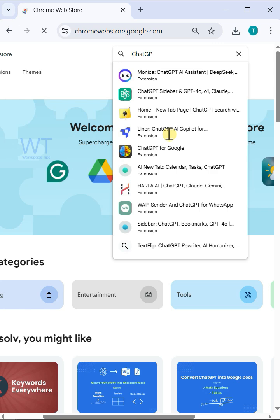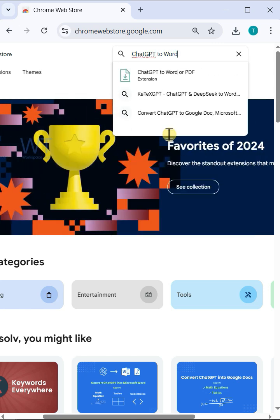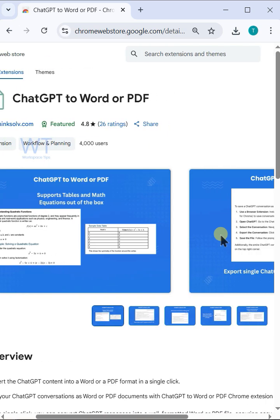Search for ChatGPT to Word or PDF, open and click add to Chrome.